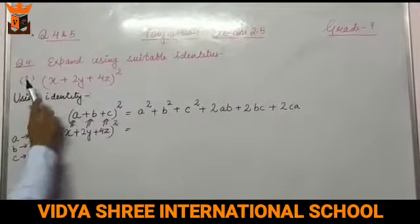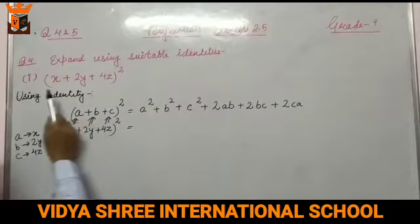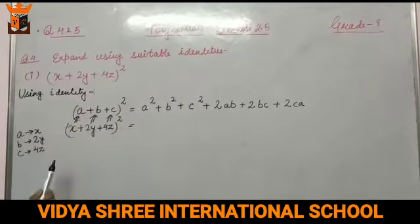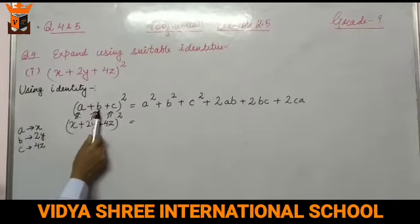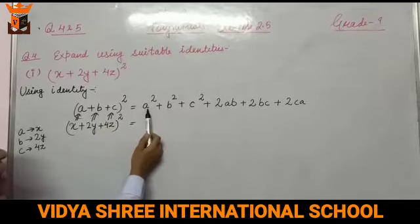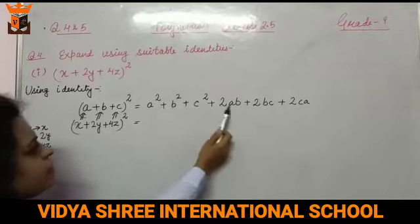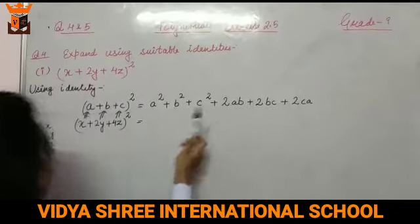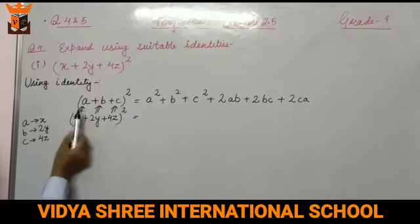This is question number 4: expand using suitable identities. The question is (x + 2y + 4z)², the whole square. We use the identity (a + b + c)² = a² + b² + c² + 2ab + 2bc + 2ca. Now let's see how we apply this identity to the question.